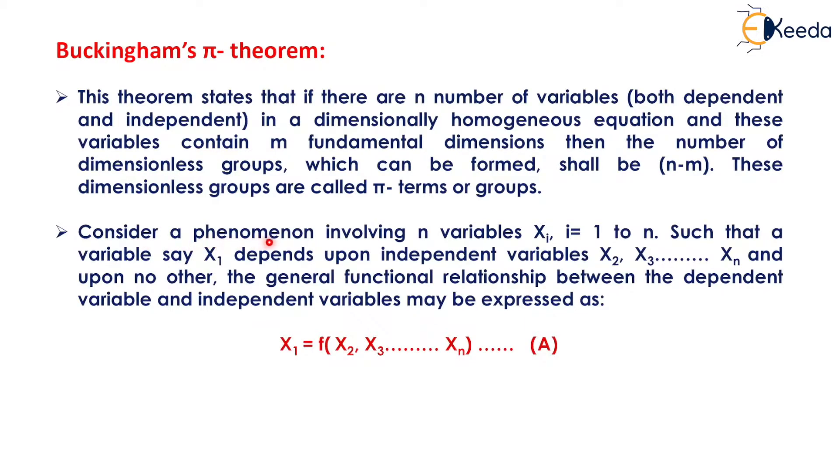Consider a phenomenon involving n variables, xi where i equals 1 to n, such that a variable say x₁ depends upon independent variables x₂, x₃ up to xₙ and upon no other. The general functional relationship between the dependent variable and independent variables may be expressed as x₁ equals function of x₂, x₃ up to xₙ, that is equation A.